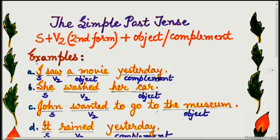Example A: I saw a movie yesterday. Here, 'I' is the subject, 'saw' is V2, 'a movie' is the object, and 'yesterday' is the complement.